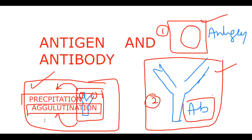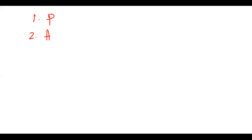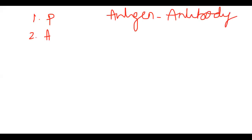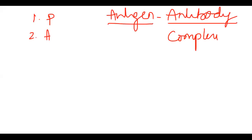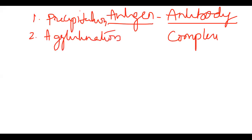So the antigen-antibody complex is visible either as precipitation or agglutination. Now we go to the third case. Individually, you can't identify them. When the antigen-antibody complex forms, in some formats they are identified as precipitate; in some formats, as agglutination. Now we go for the third case.